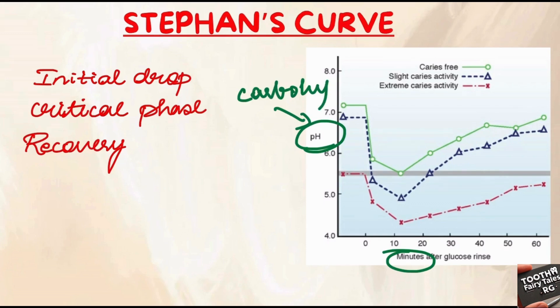Let us understand what is the initial drop, what is the critical phase, and what is the recovery phase. Initial drop: right after the consumption of carbohydrates, there is a rapid drop in the pH as the bacteria get to work fermenting the sugars.